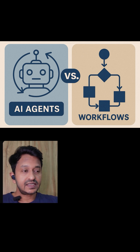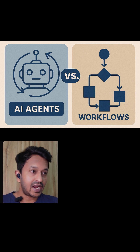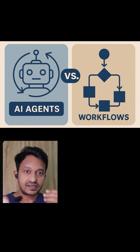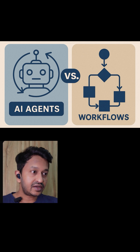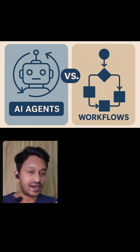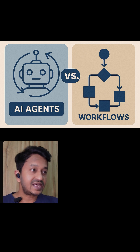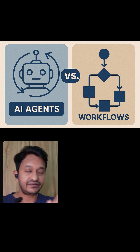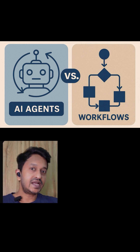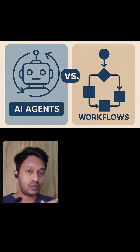Whereas AI agents are like a professional chef who can improvise on the go. You give them a goal — just a goal — like 'make dinner for six people,' and they figure out everything else. They check what ingredients are available, decide what to cook, taste as they go, adjust the seasoning, and if something burns or doesn't work out, they pivot and make something else. They keep making decisions until they achieve the goal.